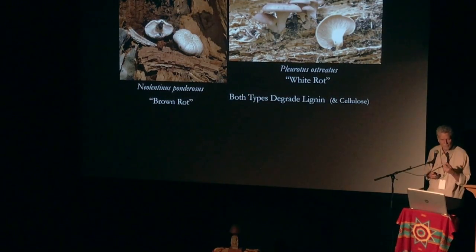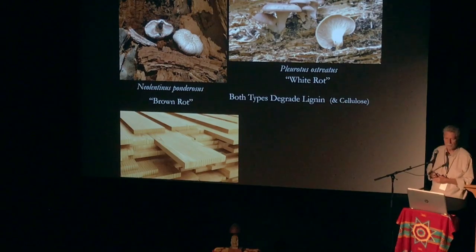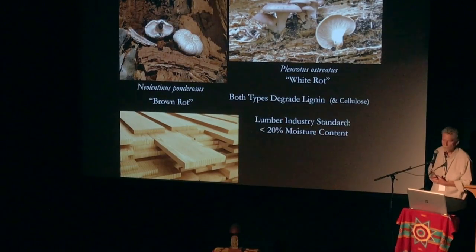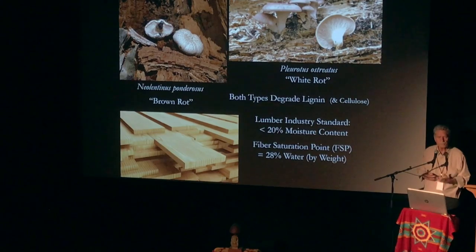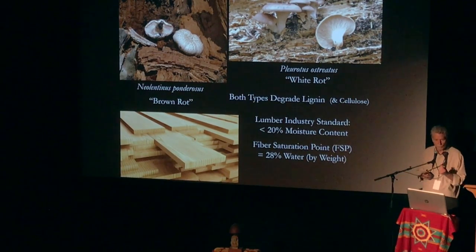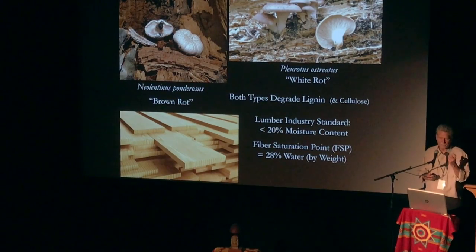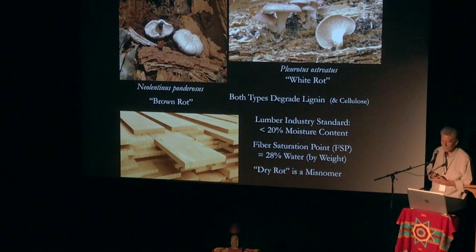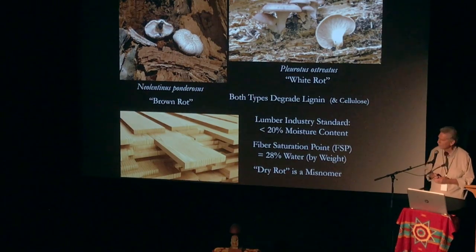Both types — brown rots and white rots — degrade lignin and cellulose for food. Here's some nice lumber, and I hate to think of this stuff rotting because it's potential fungus food. But it won't rot because the lumber industry standard is less than 20% moisture, and wood can hold up to 28% moisture. So if there's organic material in water, there's going to be rot. If you can keep the wood dry — less than 20% — you're safe. If you get a leak in the roof and the walls get wet, the floor gets wet, you're going to rot every time. And this word 'dry rot' that you've heard — misnomer. You can't have anything like dry rot. It starts with water. It's got to start with water.